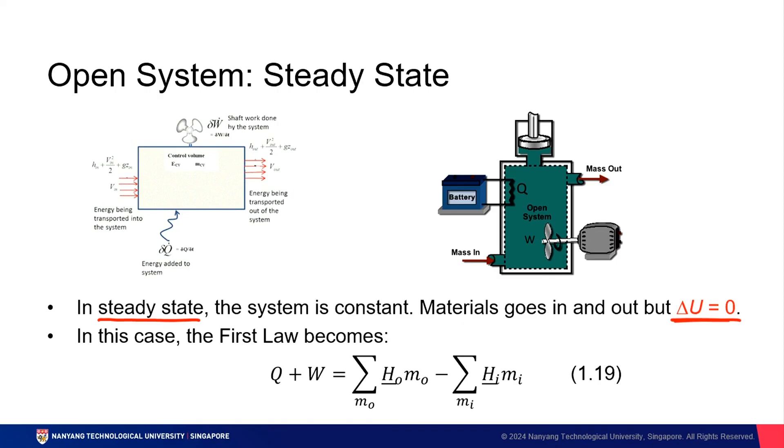In this course, we assume that all open systems live in a steady state. And in this case, we can actually rewrite the first law as the total amount of heat and work is equivalent to the total amount of energy going out minus the total amount of energy going in.